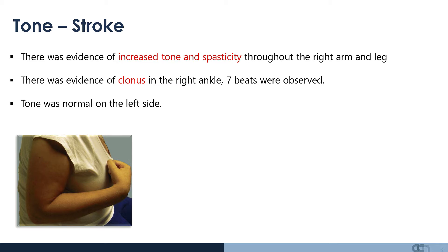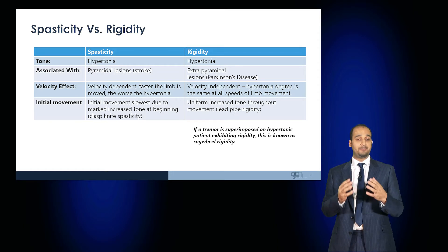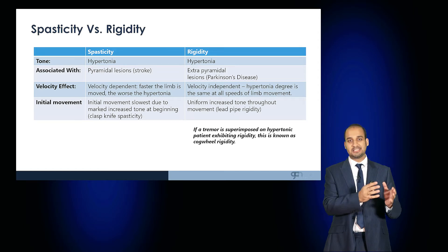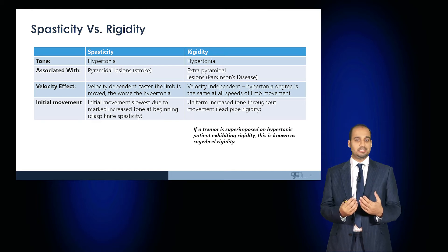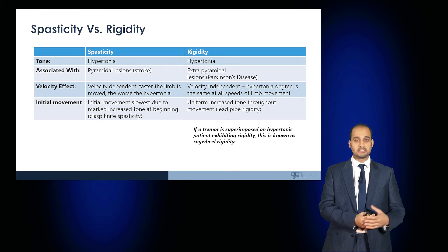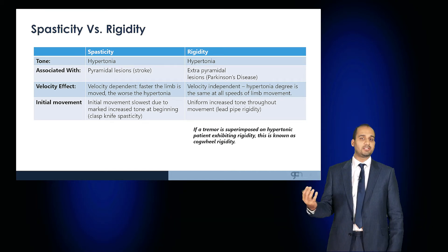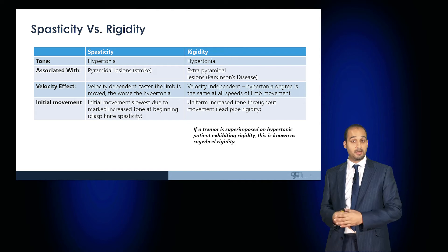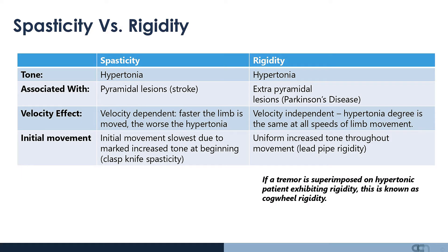More than five beats of clonus would be pathological, and on the contralateral side we would expect normal tone. Hypertonia can be categorized as spasticity or rigidity. Spasticity is associated with pyramidal lesions like a stroke, and rigidity with extrapyramidal lesions such as Parkinson's disease. Spasticity is velocity dependent — the faster the limb is moved, the worse the hypertonia — whereas rigidity is velocity independent and the degree of hypertonia is maintained regardless of speed.